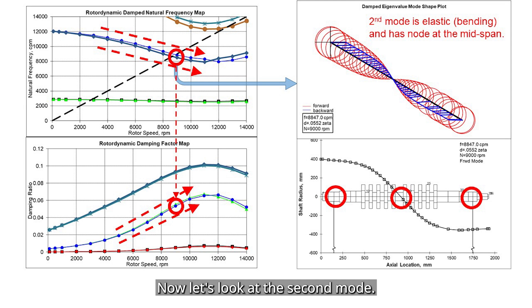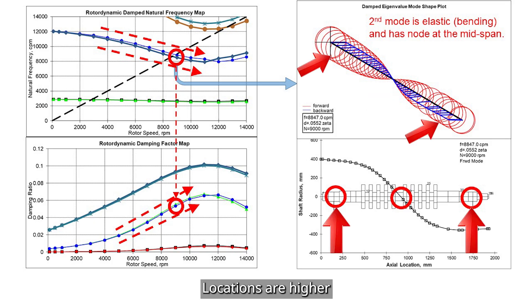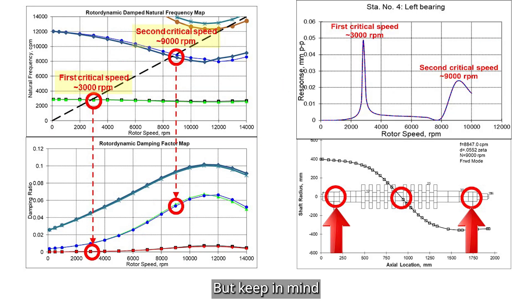Now, let's look at the second mode. This one has a node in the center of the shaft. And you'll notice the motions at the bearing locations are higher compared to the first mode. But keep in mind, the mode shape does not tell the full story.